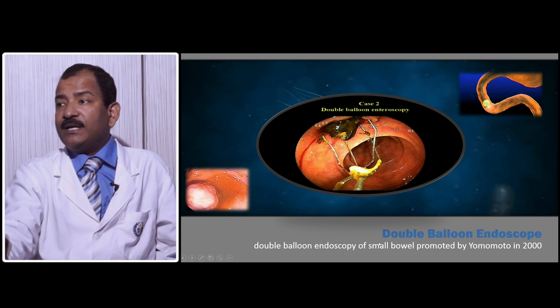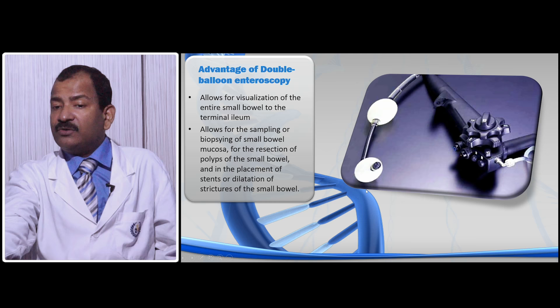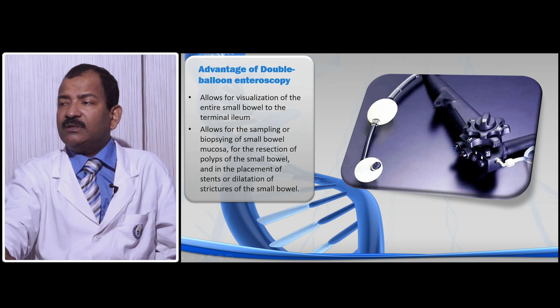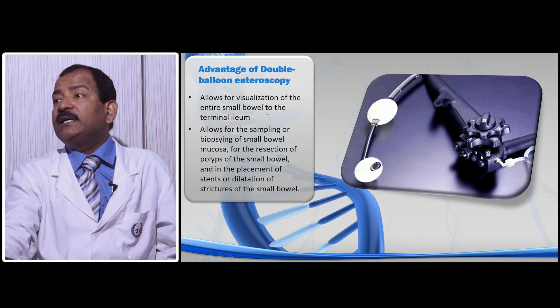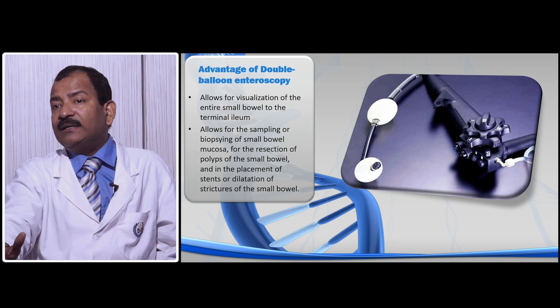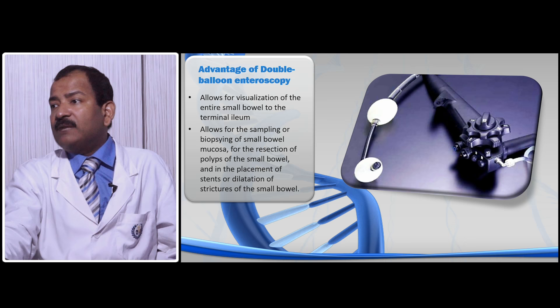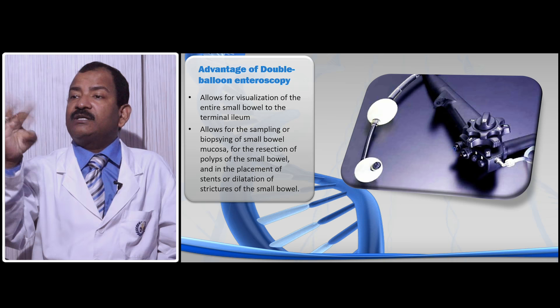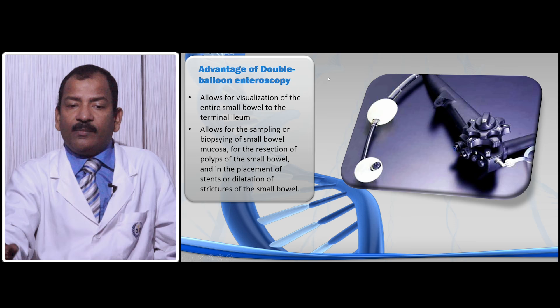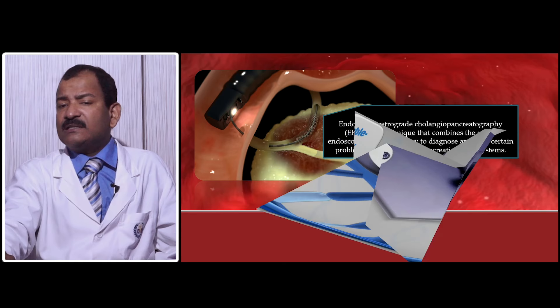In many situations now, good double balloon endoscopes are available. FUJI is one good company, and Olympus is also one very good company making sophisticated double balloon endoscopes that allow visualization of the entire small bowel up to the terminal ileum. Otherwise examining the entire ileum with a conventional endoscope is impossible. It also allows sampling or biopsy of the small bowel, resection of small polyps, or balloon dilatation of strictures — for example in Billroth II gastrectomy or pathological strictures. But it has to be carefully used; it is not for everyone.